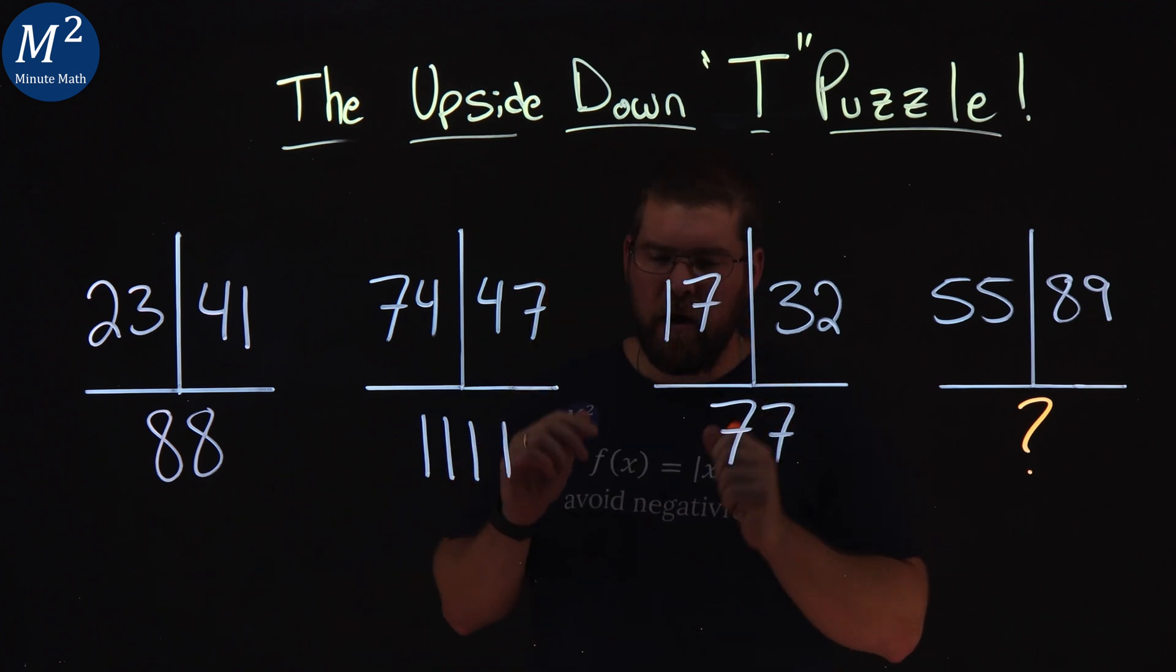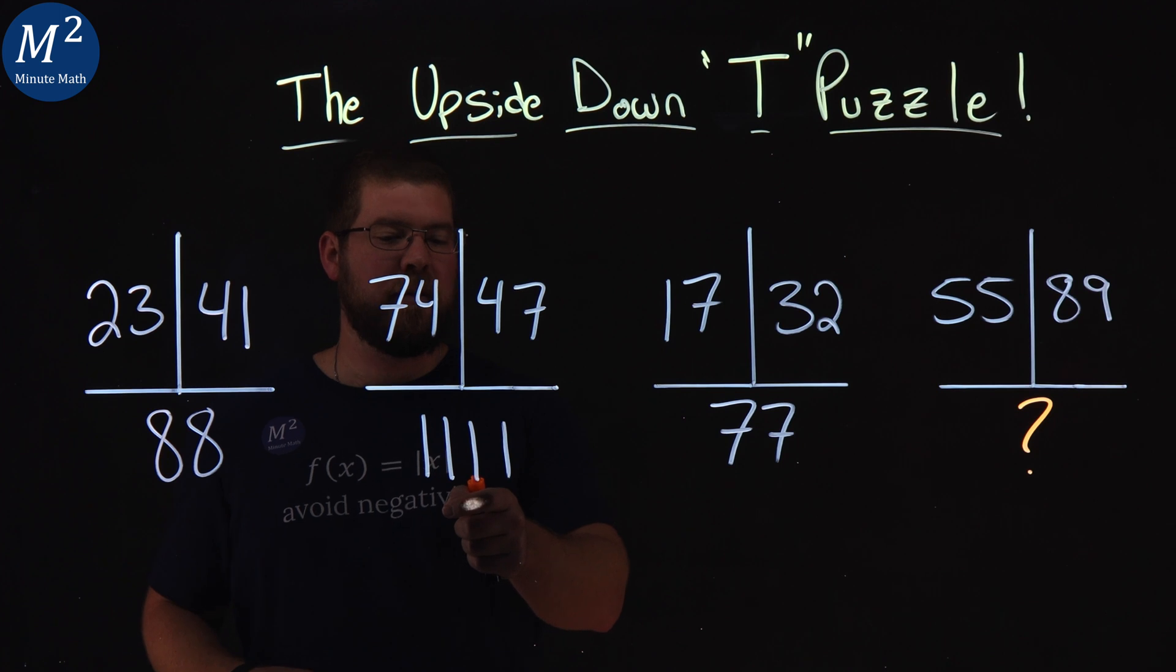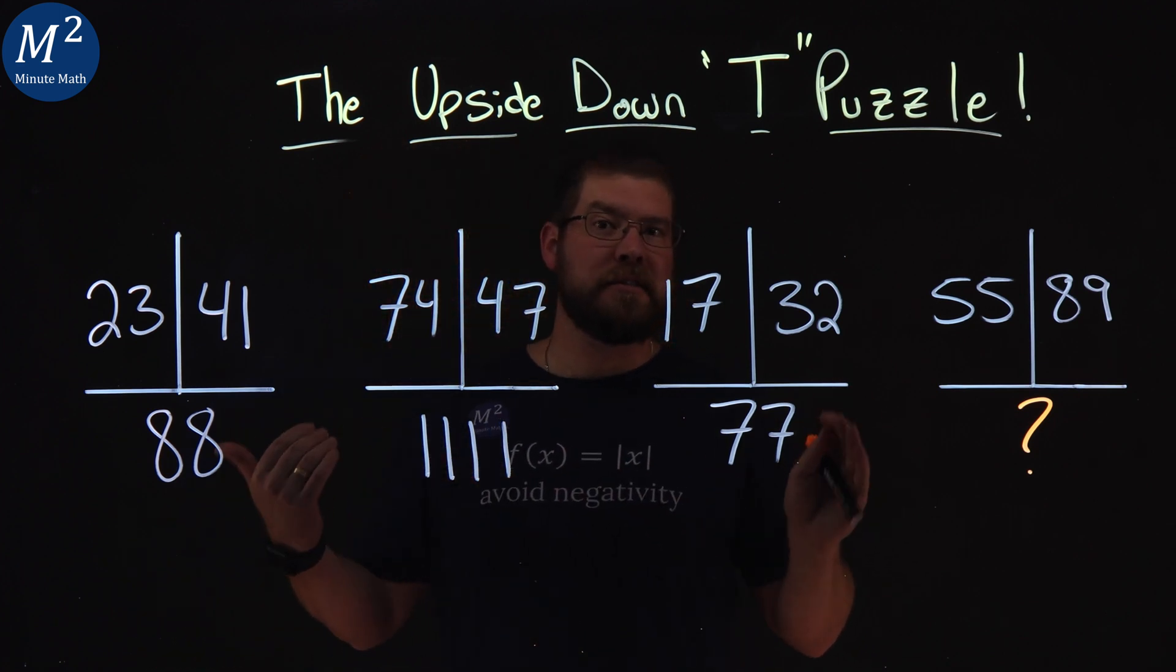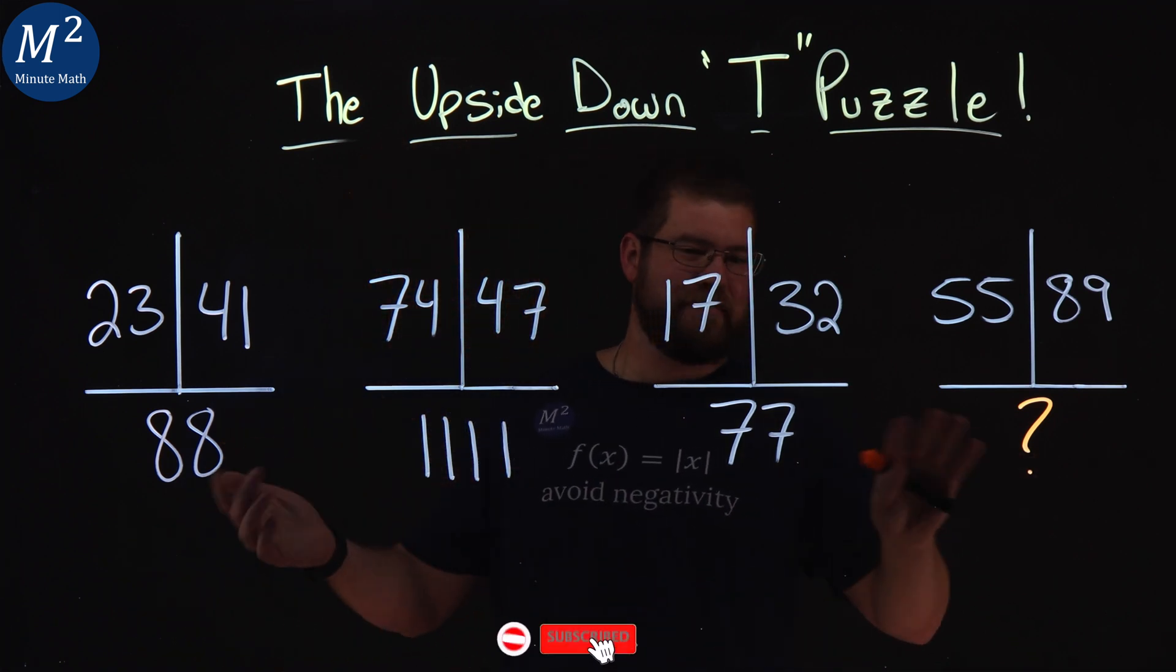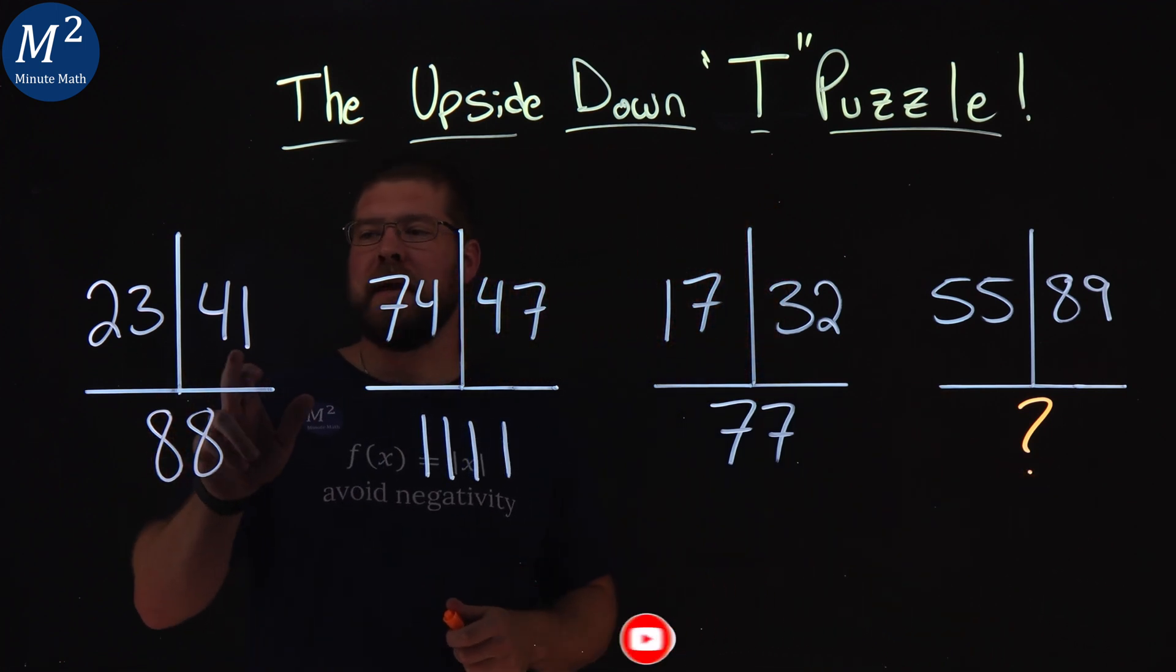Alright. Okay, first thing I'm noticing with this problem here is I see 88, 1,111, and 77. A lot of numbers are exactly the same. There's a chance that there's a pattern or something that happens down here. Alright, so let's see what we can get.